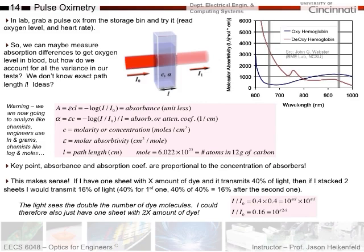How can we account for the confounding effects? You don't even know the path length you're measuring through. When you put something on your finger, you're measuring through the finger length plus all the other things in the way, such as skin and tissue — this makes it really difficult. So when you measure these things, you typically have to measure in terms of different units.